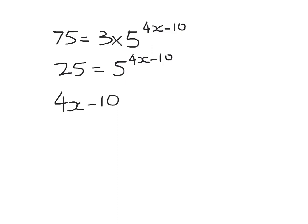So that gives me 75 is equal to 3 times 5 to the power of 4x minus 10. Dividing through, 25 is equal to 5 to the power of 4x minus 10. So we must have 4x minus 10 equals 2. 4x equals 12 and x equals 3. Thanks for watching. I'll do one of the combinations problems later on this weekend.